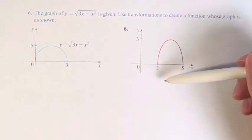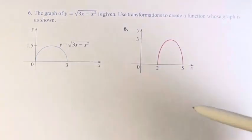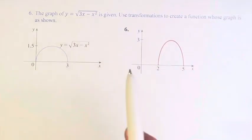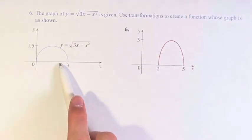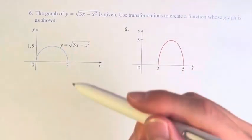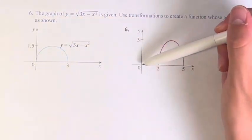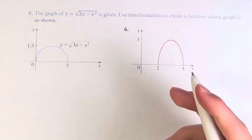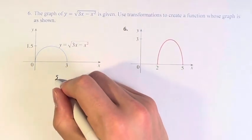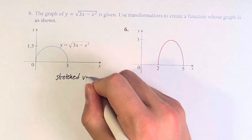Here we have another semicircle, though this one looks like it's been squished a little bit, going from 2 to 5. The distance between these two points is the same, so it has not been horizontally altered. However, the height has gone from 0 to 1.5 to 0 to 2, so it has been stretched vertically by a factor of 2.